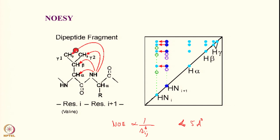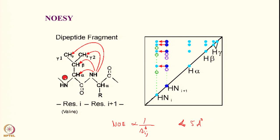NOESY can be used for sequence-specific assignment of individual protons. You use COSY and NOESY together — or double quantum filtered COSY and NOESY — to obtain resonance assignments in proteins. COSY shows cross peaks from NH to alpha, alpha to beta, beta to the two methyls, all within the same residue. In the NOESY, you additionally see correlations from the NH of residue I+1 to the alpha, beta, and gamma methyls of residue I — the previous residue. This provides directionality.